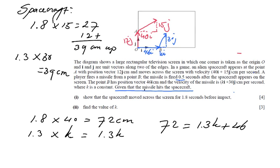And then you work it out, it's a relatively easy equation. You take away 46 on both sides. 72 take away 46, that is 26, so 26 equals 1.3 K. And then you divide both sides by 1.3. So 26 divided by 1.3, and that equals 20. So K is 20.